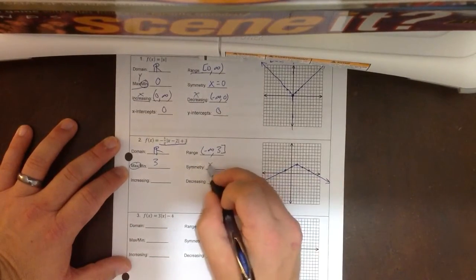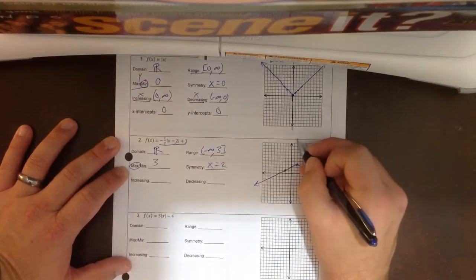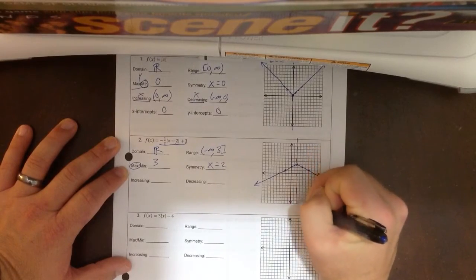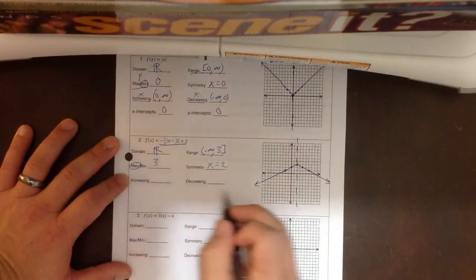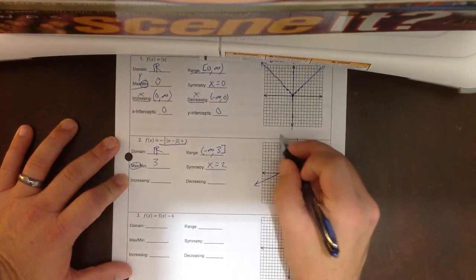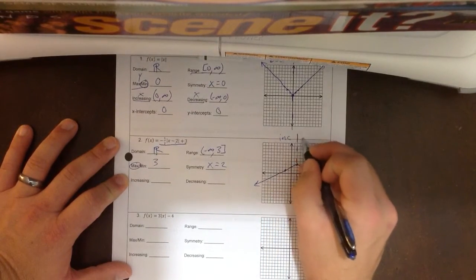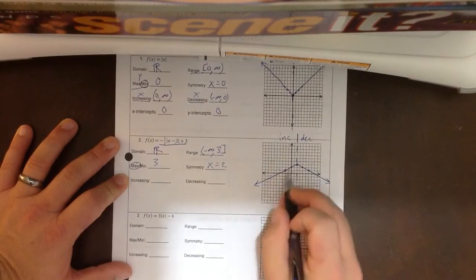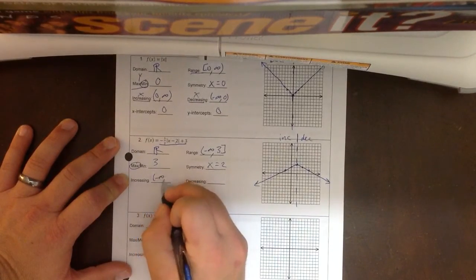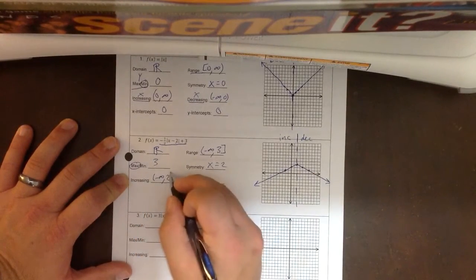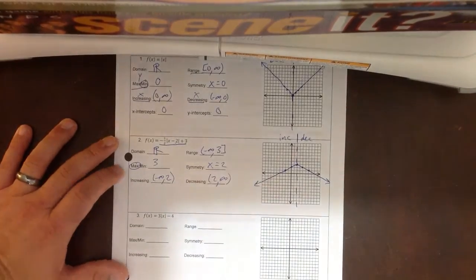Symmetry, x equals 2. It's right here where x equals 2. Increasing and decreasing. On this one, it has a positive slope, so it's going to increase on this side, split, and decrease on this side. So we're going to increase from negative infinity to where x is 2, and then pick back up at 2 all the way to infinity.